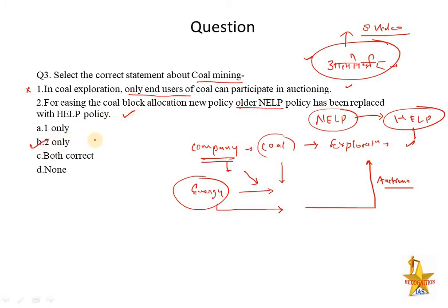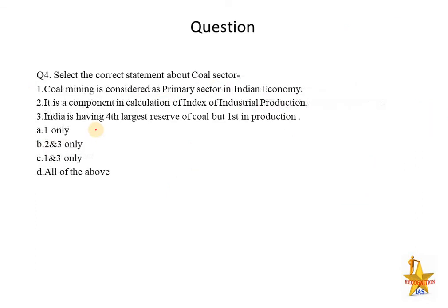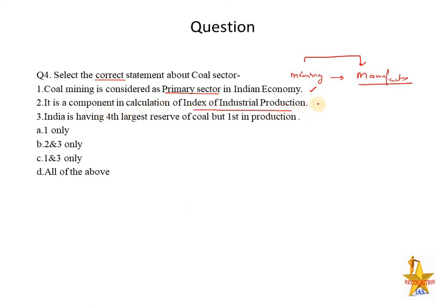Another basic question: coal mining is considered part of which sector? Coal mining falls under the primary sector, and it is also counted in the manufacturing sector — these are two different sectors. Mining is a raw material activity, so it stays in the primary sector, while it is also counted in the manufacturing sector. The second statement says coal is a component in the Index of Industrial Production — yes, among the 8 core industries in IIP, coal is one important industry.